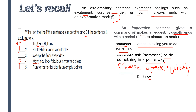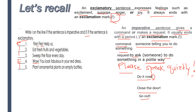A request: 'Please speak quietly.' So it ends with an exclamation mark, but this is not an exclamatory sentence. 'Do it now' is an imperative sentence — it is not an exclamatory sentence. Other examples: 'Close the door' — imperative sentence. 'Go out' — imperative sentence. It gives a command.